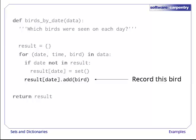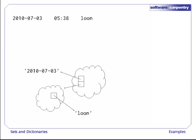Let's watch this function in action. We start with an empty set. After reading the first observation, we add an entry to our dictionary with the date 2010-07-03 as its key and an empty set as its value. We then immediately add the name Loon to that set, leaving the structure shown here.